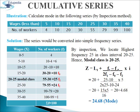The formula of mode is Z = L1 + (F1 − F0) / (2F1 − F0 − F2) × I, where Z is mode, L1 is the lower class limit of the modal class, F1 is the frequency of the modal class, F0 is the frequency of the class preceding the modal class, F2 is the frequency of the class succeeding the modal class, and I is the size of the modal class. We locate F0, F1, and F2 from the table, put the values into the formula, and after calculation we get mode = 24.68 for this illustration.